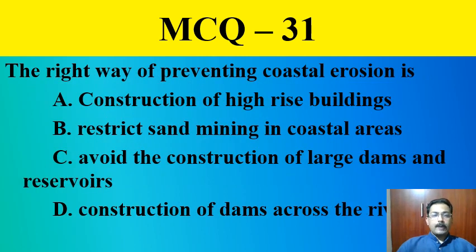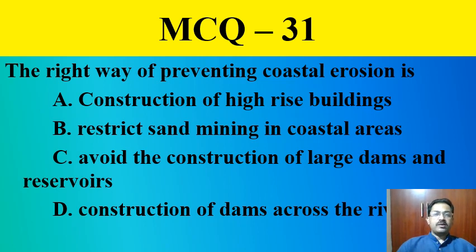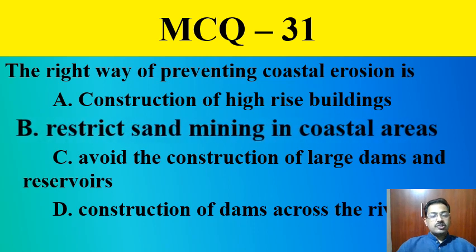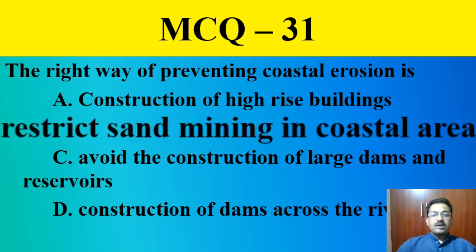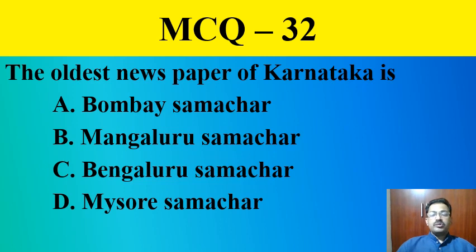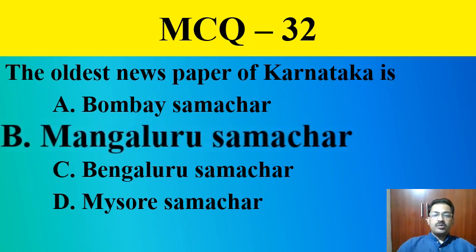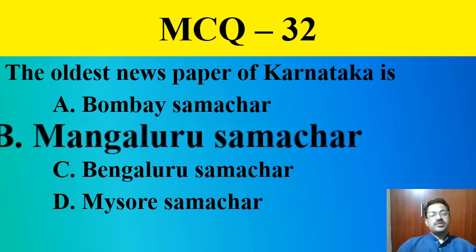MCQ question number thirty-one: The right way of preventing coastal erosion is — construction of high-rise buildings, restrict sand mining in coastal areas, avoid construction of large dams and reservoirs, or construction of dams across rivers. The correct answer is restrict sand mining in coastal areas. MCQ question number thirty-two: The oldest newspaper of Karnataka is Mangaluru Samachara.